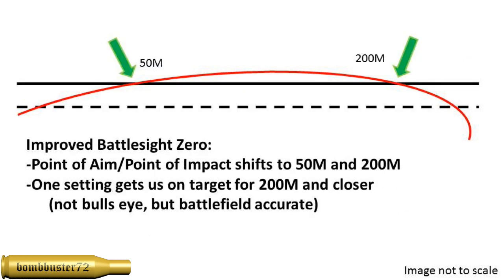With improved battle sight zero, what we're doing is we're taking our point of aim, point of impact, and we're shifting it up in the arc of the bullet. So we're going to move our point of aim, point of impact to 50 meters and 200 meters. Now this is all approximately, what we really want to do is we want to sight it in at 200 meters, and this will be approximate for 50.